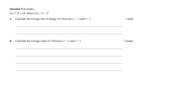In this video I'm going to show you how to answer the Maths Methods 2023 sample exam 1 question 5. We've got a little function f where f of x equals 2 minus x squared. Calculate the average rate of change of f between x equals minus 1 and x equals 1.